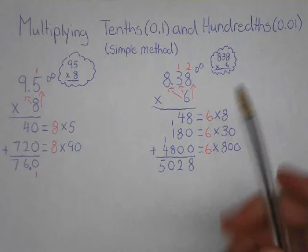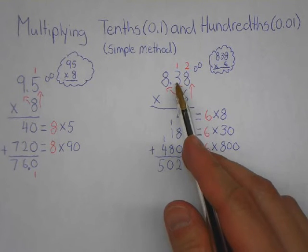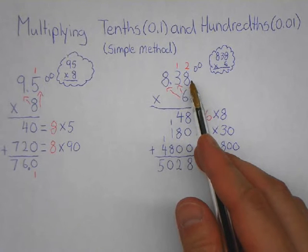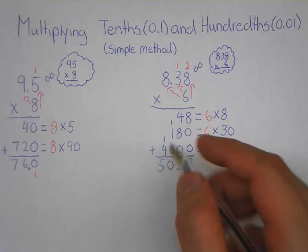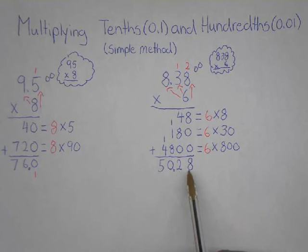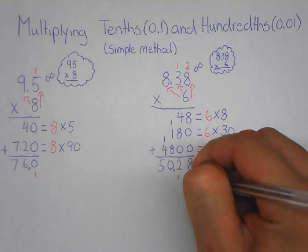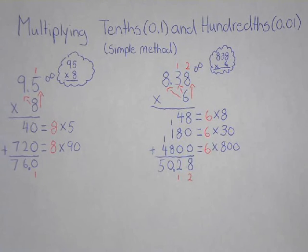So all you simply have to do with your answer is do the same thing as this. If you have 2 decimals behind in your question, you're going to have 2 decimals behind in your answer. So you place your decimal where you have 2 behind. So you get an answer of 50.28.